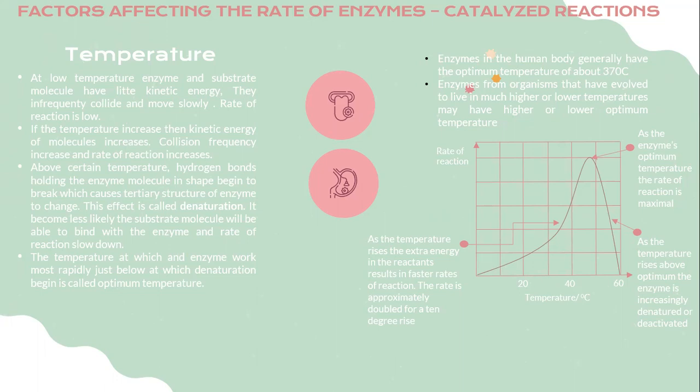After a certain temperature, hydrogen bonds holding the enzyme molecule in shape begin to break, which causes the tertiary structure of the enzyme to change. This effect is called denaturation. It becomes less likely that the substrate molecule will be able to bind with the enzyme, and the rate of reaction slows down. The temperature at which an enzyme works most rapidly, just below the point at which denaturation begins, is called the optimum temperature. Enzymes in the human body generally have an optimum temperature of about 37°C. Enzymes from organisms that have evolved to live in much higher or lower temperatures may have higher or lower optimum temperatures.